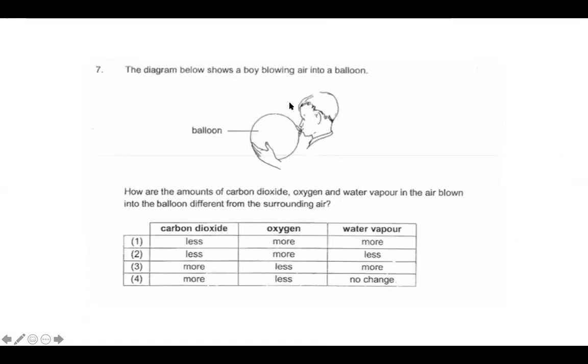The diagram below shows a boy blowing air into a balloon. How are the amounts of carbon dioxide, oxygen and water vapor different from the surrounding air? Let's think about the gases. So when we breathe out, we're breathing out carbon dioxide and also water vapor. Whereas what we're breathing in is oxygen. But this oxygen is going into us and we're blowing out CO2. So there's not that much oxygen in the balloon. Whereas we do have a lot of carbon dioxide. We do have a lot of water vapor, but we don't have that much oxygen.